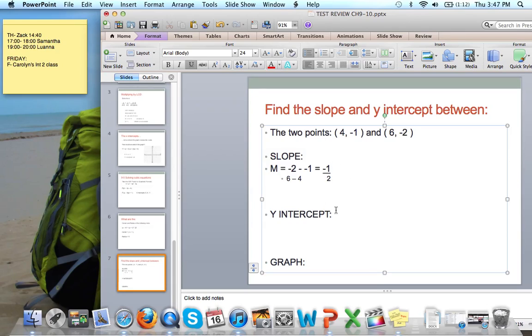We can use that to solve for the y-intercept. So what we are going to do is we're going to take our equation, y equals mx plus b. And we're going to put in one of these points. I usually say let's take the smaller one, the easiest numbers. So negative 1 equals m, which we just said was negative 1 half, times x, which is 4, plus b.